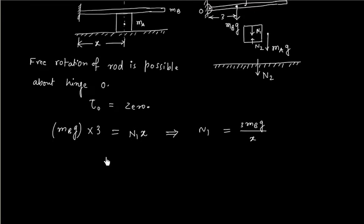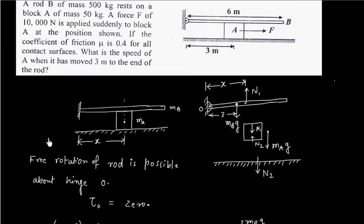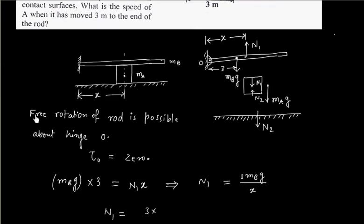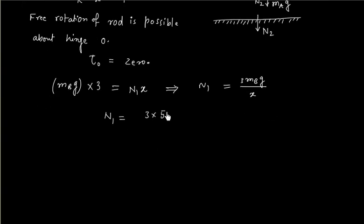So if we plug the values of masses, rod is of 500 kg. So this is normal reaction.